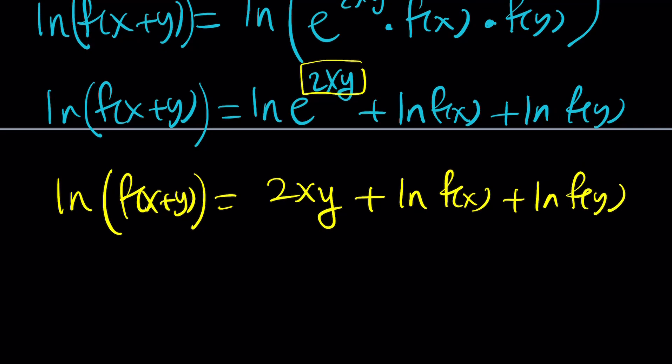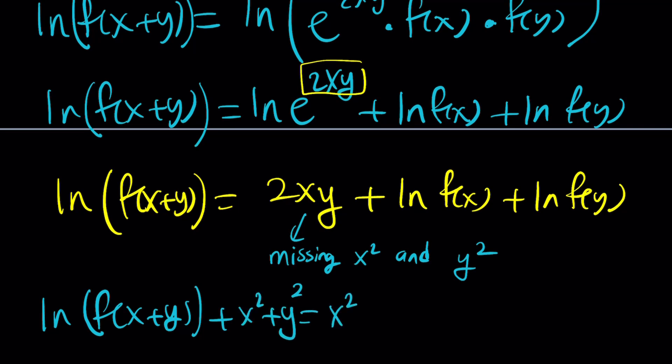Now we have 2xy, and 2xy is calling for x squared and y squared. So this expression right here is missing x squared and y squared to become a perfect square, because every expression wants to be a perfect square, right? So that's what we're missing. Let's go ahead and add that to both sides then. ln f of x plus y, I'm going to add x squared plus y squared on the left and on the right.